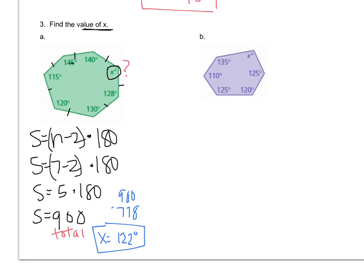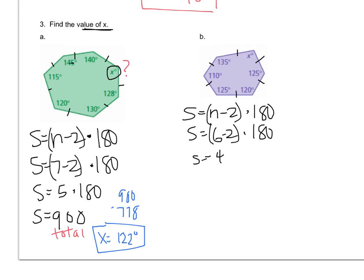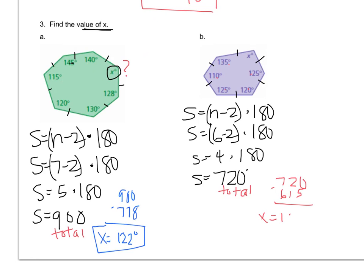If you want to try example B on your own, go for it. First we have to figure out how many degrees there should be, so write the formula. This shape has 6 sides, and using the formula that gives us 720 degrees total. Pause the video and add up the five given angles. I got 615, so 720 minus 615 means X is 105 degrees.